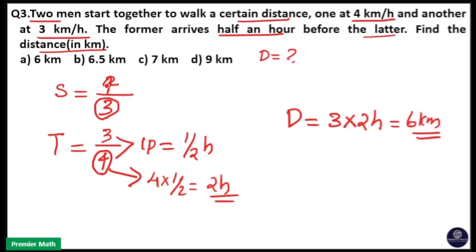If you want to take the other ratio, then distance will be 4 into 3 into 1 by 2, that is 6 km. So you can take anything. If you take 3, then you have to take here 4. If you take 4 here, you have to take 3 here. So distance is 6 km. Option A is your answer.